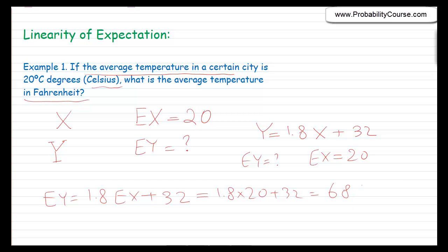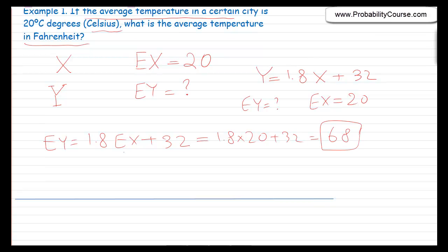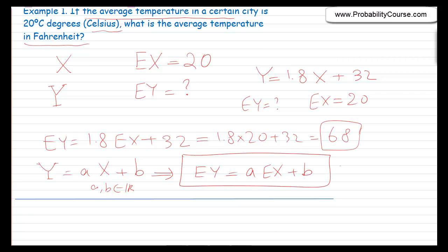That is the correct answer. What we are using here is that if I have a random variable y which is a linear function of another random variable x — so y equals a times x plus b, where a and b are fixed real numbers — then we can say that E[y] = a·E[x] + b. We are using the linearity of expectation. Expectation is a linear operation.